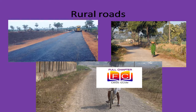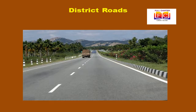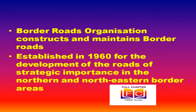Rural roads, which link rural areas and villages with towns, are classified under this category. Under the Pradhan Mantri Gram Sadak Yojana scheme, special provisions are made so that every village in the country is linked to a major town by an all-season motorable road. Apart from this, the Border Roads Organisation constructs and maintains roads in the bordering areas of the country. Established in 1960, it develops roads of strategic importance in the northern and northeastern border areas, improving accessibility in difficult terrain and aiding economic development.